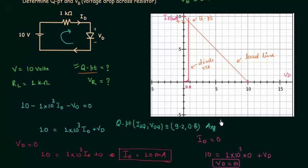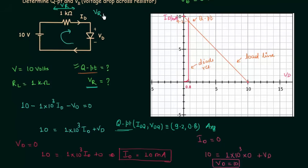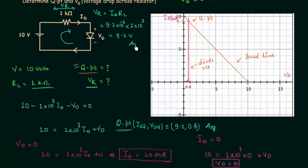Now we move to the second part: calculating the voltage drop across the resistor. The current flowing through the circuit is Idq = 9.2 milliamps. Note that Idq is just the representation for the Q point current — it is the same as Id. From Ohm's law, Vr equals Id × RL, which is 9.2×10⁻³ multiplied by 1×10³, giving Vr equal to 9.2 volts.